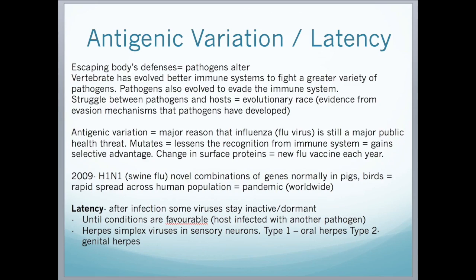Antigenic variation is a major reason the influenza virus is still a major public health threat. Because it mutates, it lessens recognition by our immune system, giving it a selective advantage. It changes its surface proteins, meaning we need to produce a new flu vaccine every year. Another example is the 2009 pandemic of swine flu, also known as H1N1, which can produce novel combinations of genes normally found in pigs and birds. Latency refers to a dormant period after an infection with a virus. For example, herpes simplex viruses can stay dormant for a long period until conditions are favourable, such as when the immune system is weakened by another pathogen.